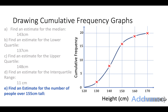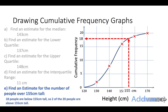Finally, we're going to find an estimate for the number of people over 155 centimetres tall. We look for 155 centimetres on the graph, draw a line up from that, then go across. This tells us there are about 18 people who are less than 155 centimetres tall. We want the number above, and there are 20 people in total, so there must be 2 people above 155 centimetres tall.